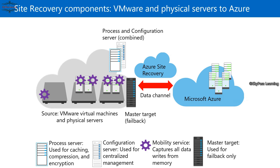The on-premises components also include a processing server and mobility services, plus a master target server used to connect with Azure, send and receive data. This scenario is achievable and configurable, but not widely used. People with VMware environments are mostly not syncing with Azure because it requires high bandwidth utilization — replicating large VM data sizes to the cloud and back is not very practical.